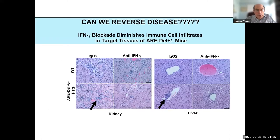Can we reverse disease? Treatment in the kidney and liver with anti-interferon gamma antibody does, in fact, reduce the lymphocyte infiltration into the liver. There is a clinically approved anti-interferon gamma antibody — not for this disease, but it offers the possibility that neutralizing gamma interferon directly could be effective. Antibodies are expensive, so we're hoping to work with a company that has made an anti-interferon gamma to see if it can inhibit disease.